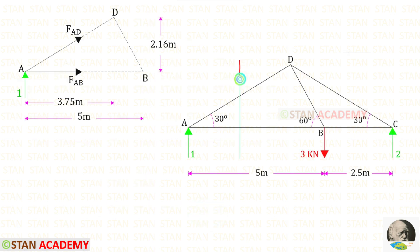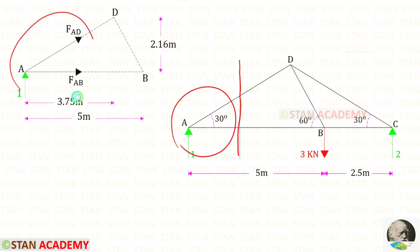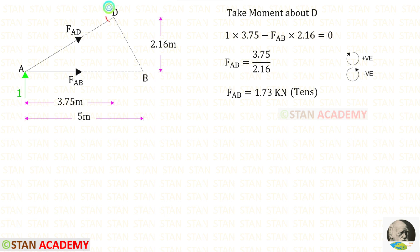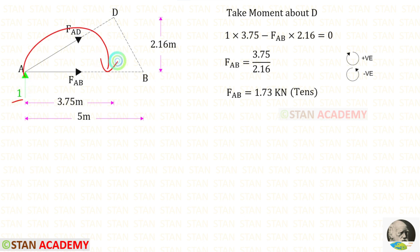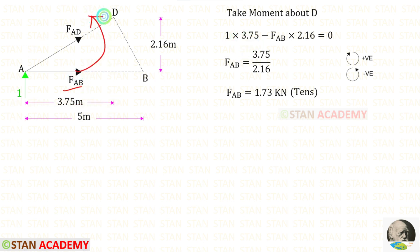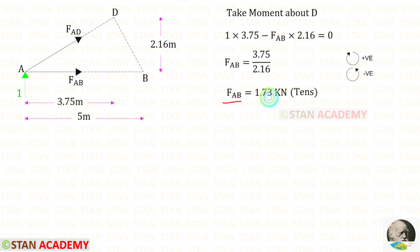Now I am going to make the first section like this and I am going to take the left side portion and do the analysis. Let us take a moment about D. When we take moment about D we should not consider FAD. The remaining forces are 1 and FAB. 1 is acting in the clockwise direction so that it will be positive and the distance is 3.75. FAB is acting in the anticlockwise direction so that it will be negative and the distance is 2.16. For FAB we will get a positive value so that it is tensile.